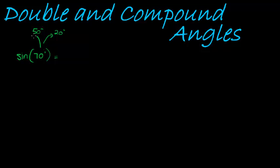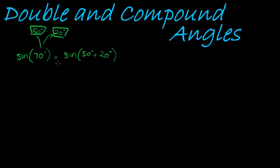Let's say I know what the ratio is going to be for sine and cos for those angles, but I don't know what the ratio is for 70 degrees. Is there some way I can express this? I can write sine of 50 degrees plus 20 degrees to rewrite the 70, but this is definitely not equal to the sine of 50 degrees plus the sine of 20 degrees.